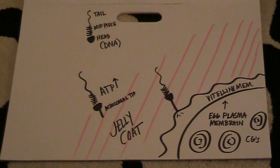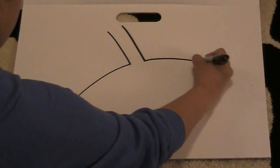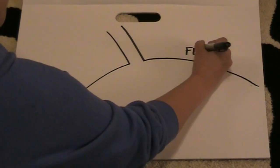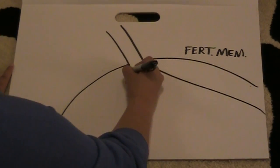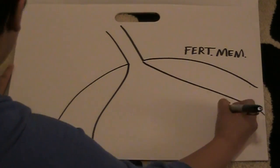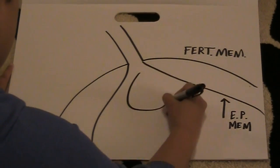As contact happens, many things happen simultaneously. This is a closer view. The top part is the mid-piece. Where's the head? It's gone. It has been degraded, so that the DNA can be delivered.